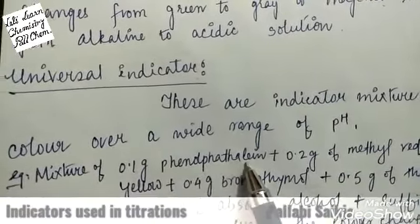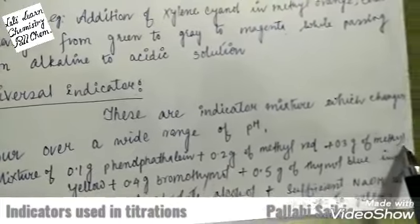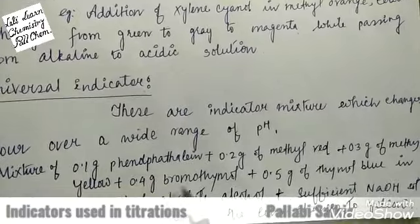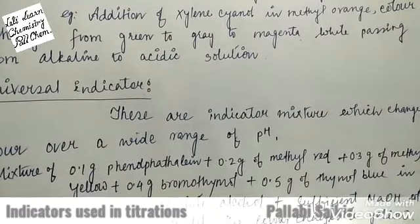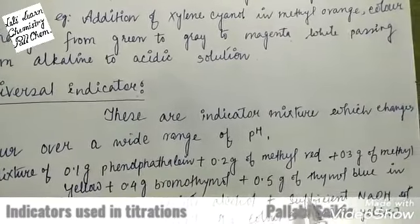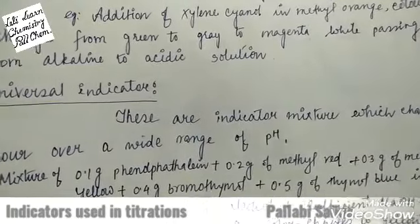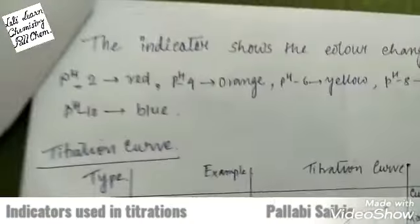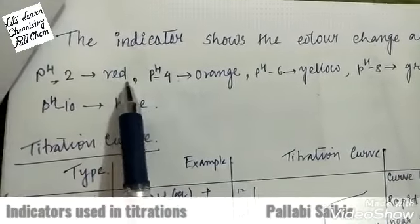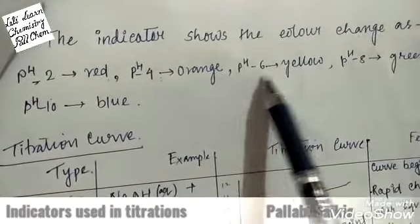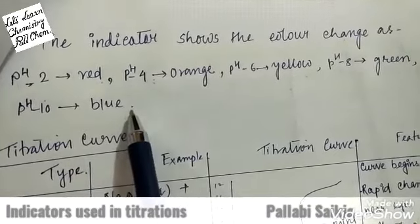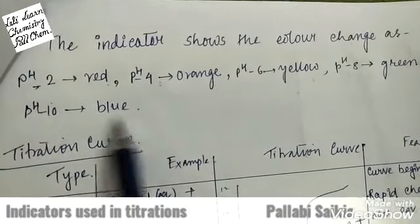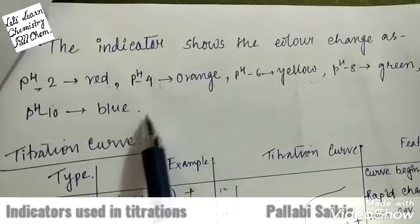One example of universal indicator composition: a mixture of 0.1 g phenolphthalein, 0.2 g methyl red, 0.3 g methyl yellow, 0.4 g bromothymol blue, and 0.5 g thymol blue are mixed in 500 mL of absolute alcohol and sufficient sodium hydroxide is added until the color changes to yellow. This universal indicator shows the following colors: at pH 2 it is red, at pH 4 it is orange, at pH 6 it is yellow, at pH 8 it is green, and at pH 10 it is blue.